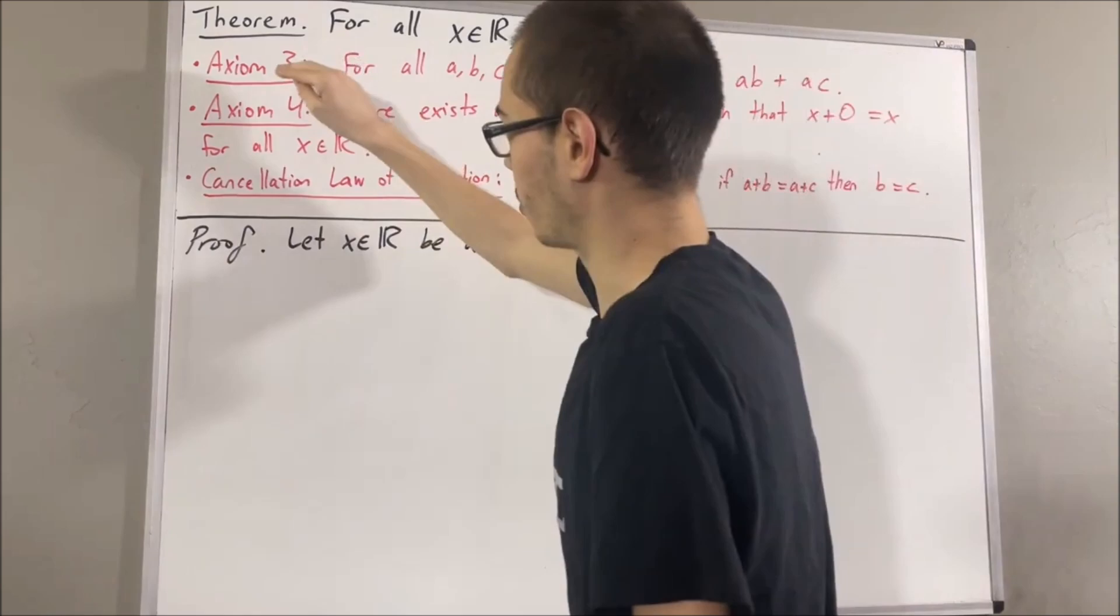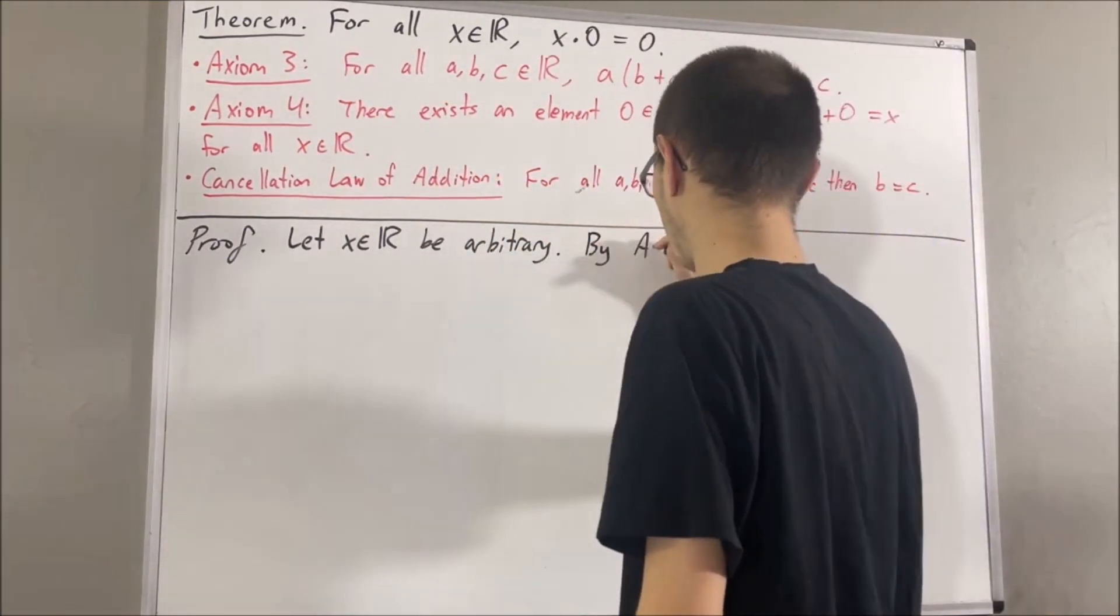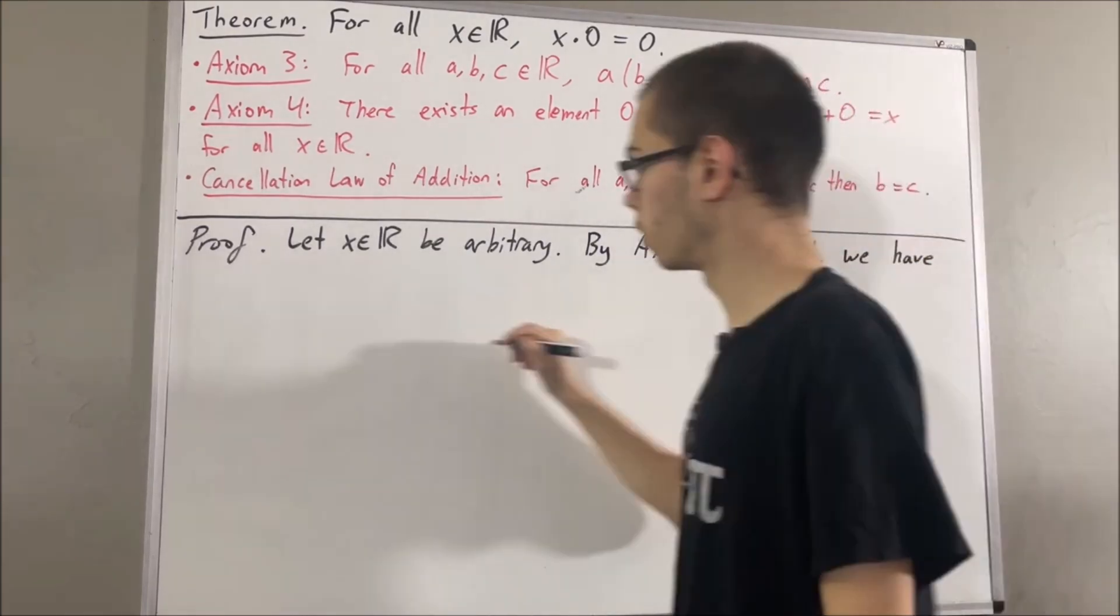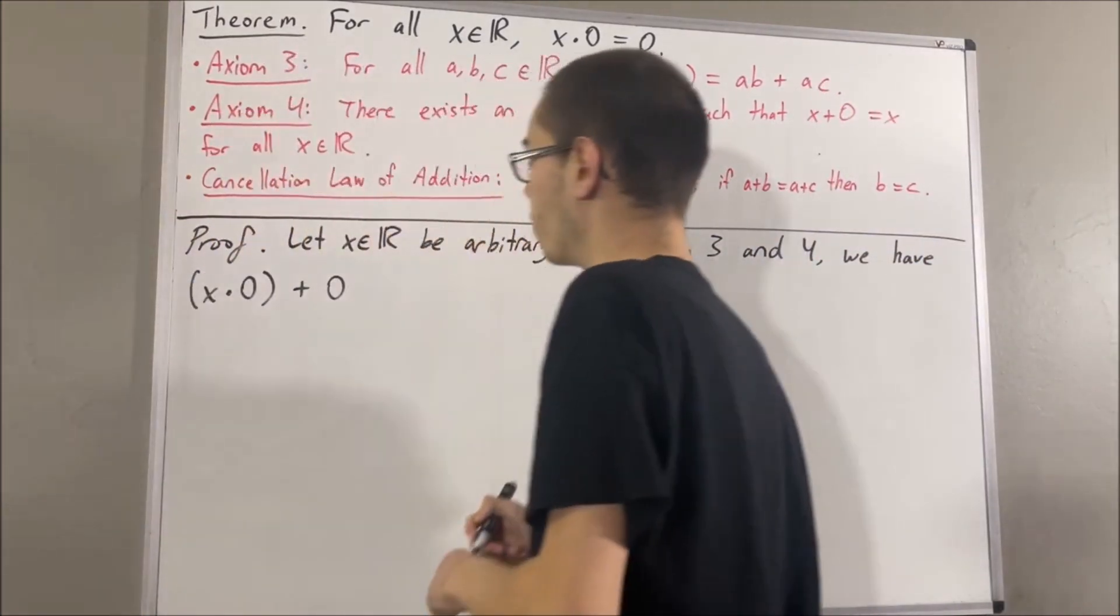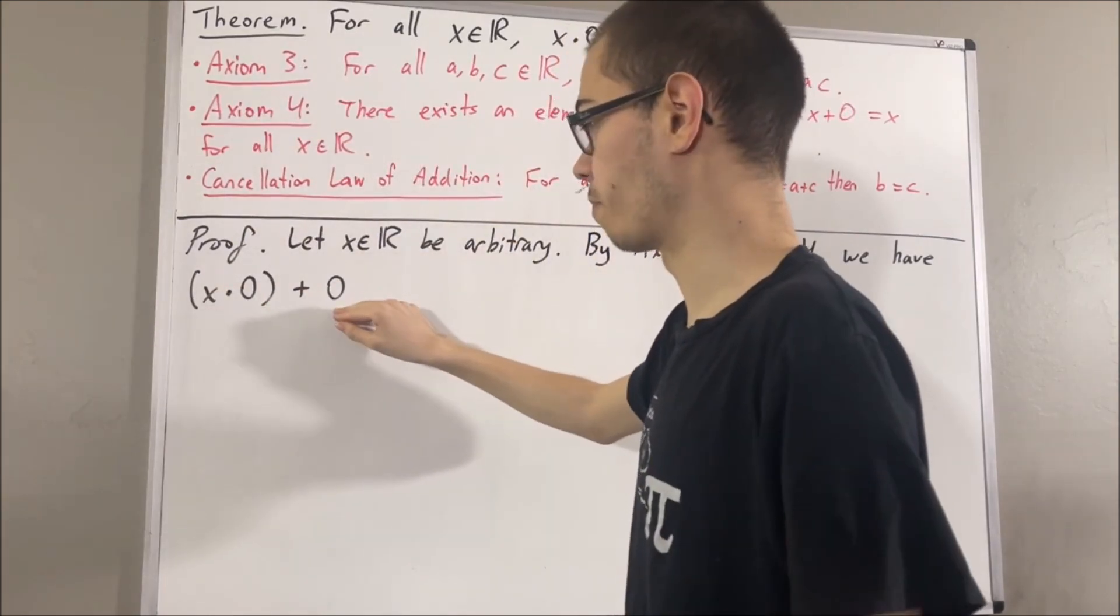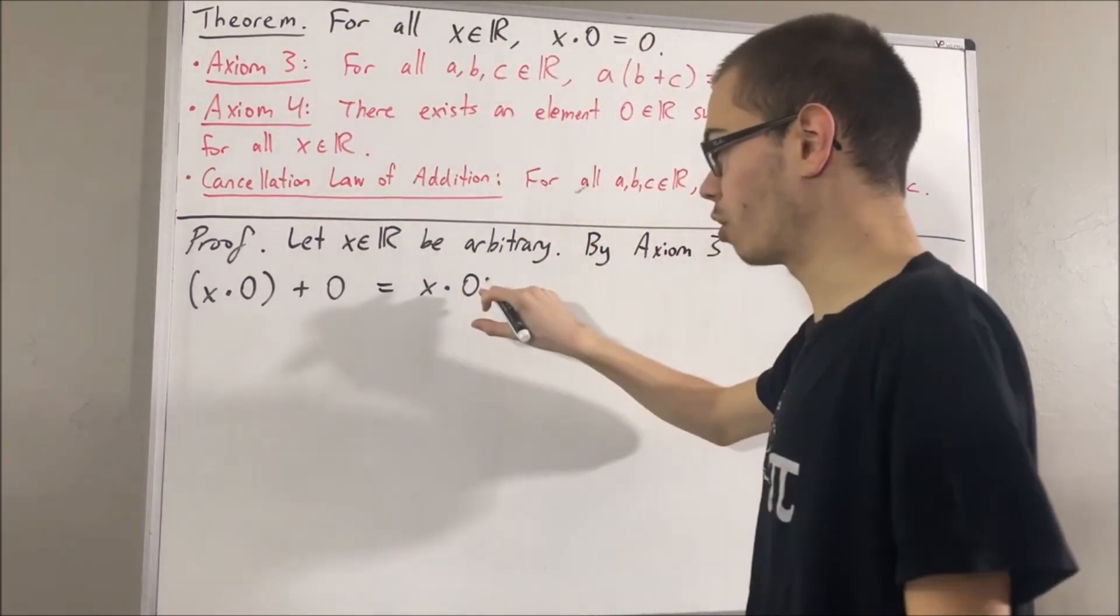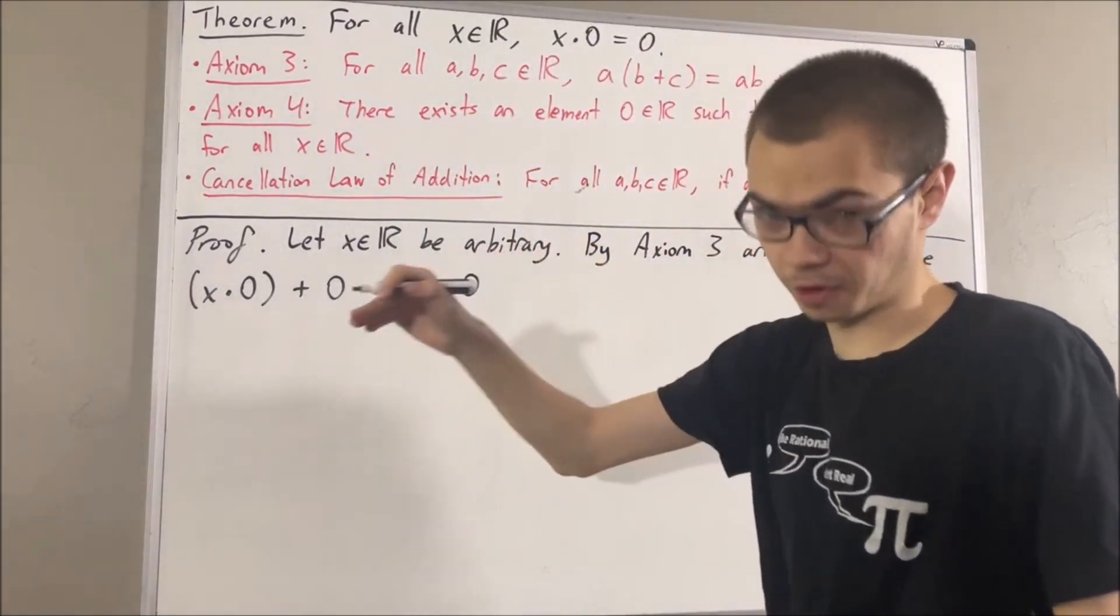And, applying axiom 3 and 4, the observation is as follows. First of all, by axiom 4, we know that x times 0 plus 0 is equal to x times 0. Applying axiom 4 again, we can replace 0 with 0 plus 0.